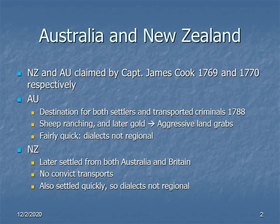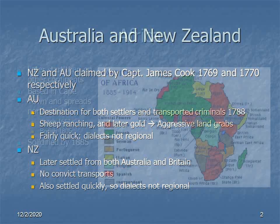New Zealand, on the other hand, was not a destination of convict transports, but it was settled quickly, similarly to Australia. And so here as well, the dialects tend to be not regional, but social or even socio-economic.